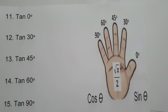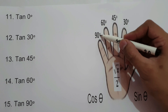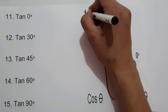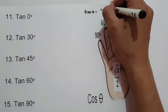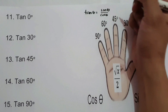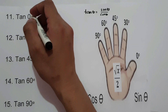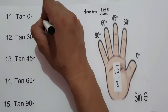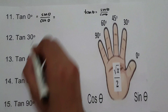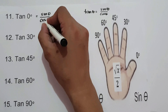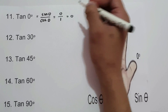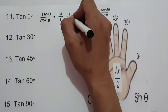On the third set of examples, we are going to find the value of tangent 0°, 30°, 45°, 60°, and 90° using the equation square root of x over 2. We know that tangent theta equals sine theta over cosine theta. For tangent 0°, that is sine 0° over cosine 0°, which is 0 over 1, that is 0. Therefore, tangent 0° is 0.